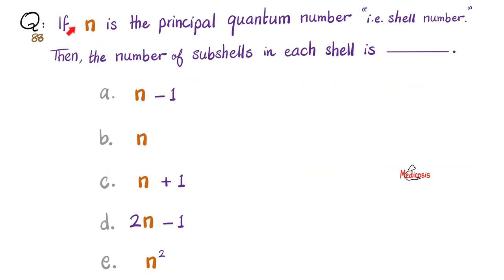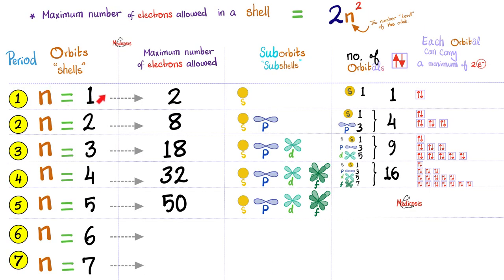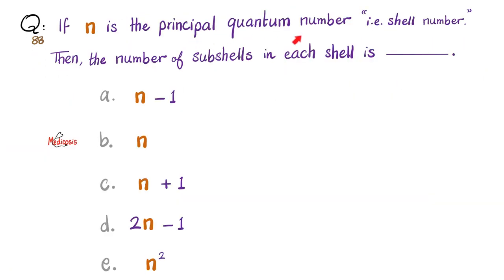Question: if n is the principal quantum number (i.e., the shell number), then the number of sub-shells in each shell is... Notice that the first shell has 1 sub-shell, the second shell has 2 sub-shells, the third shell has 3 sub-shells, and the fourth shell has 4 sub-shells. The answer is simply n.